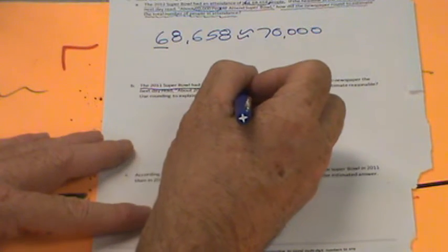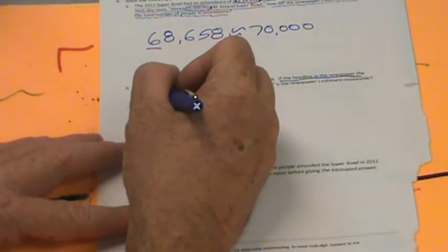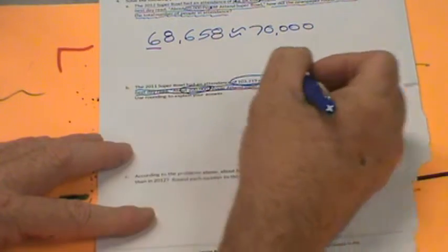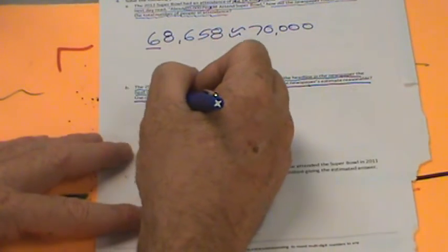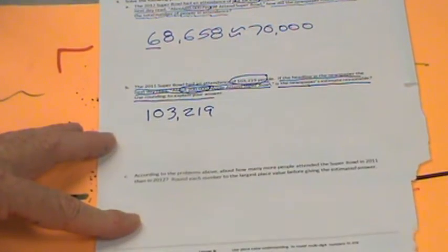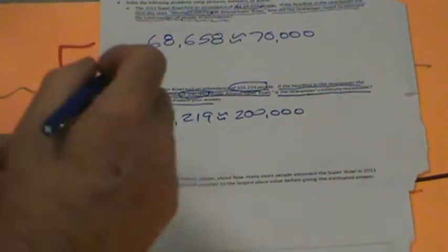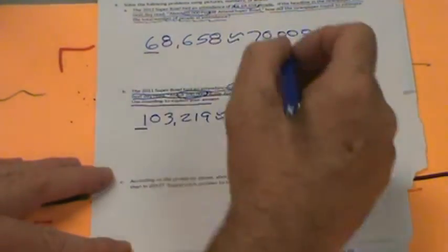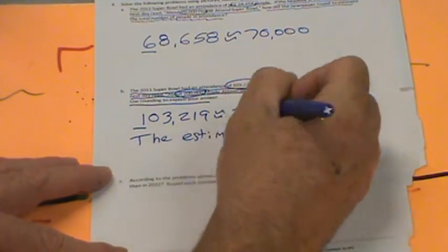The 2011 Super Bowl had an attendance of 103,219 people. But if the headline in the newspaper the next day read about 200,000 people attended the Super Bowl, is the newspaper estimate reasonable? Use rounding to explain your answer. How in the world could this newspaper put 103,219 people is rounded to 200,000? Obviously, they were trying to round the nearest 100,000, but they did a terrible job, didn't they? Isn't this closer to 100,000? Yeah. So the newspaper's estimate is not reasonable.